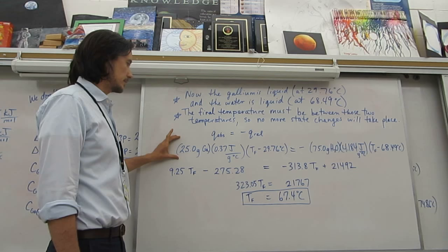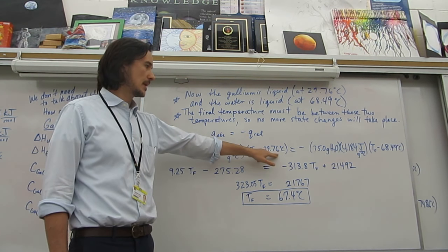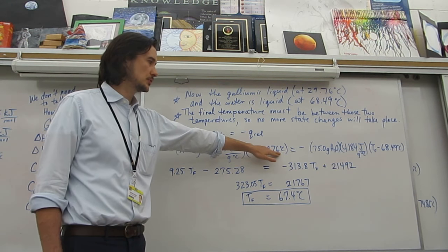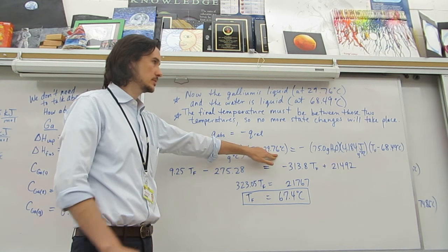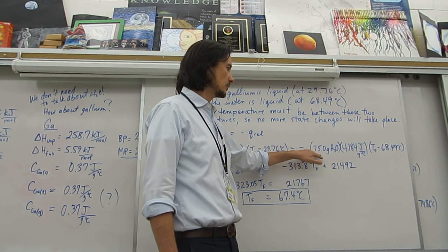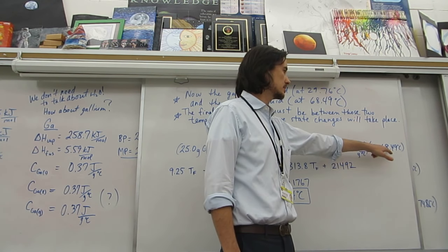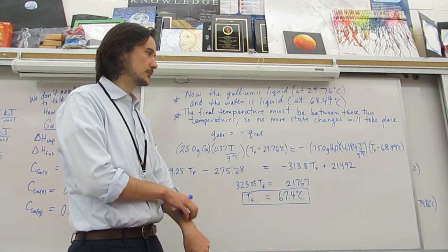We plug in 25 grams of gallium, the specific heat of gallium, T_f minus the initial temperature of the gallium. Notice that initial temperature is the melting point, right? This is right after all the gallium melts. It's now this temperature. And the water: 75 grams, 4.184, and T_f minus the 68.49 that was the temperature after melting the gallium. Notice that's negative.